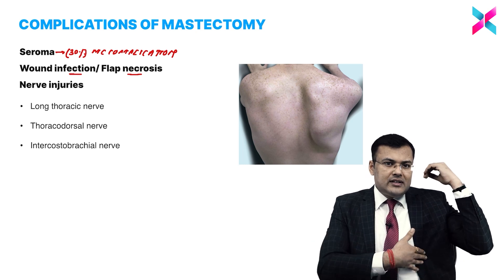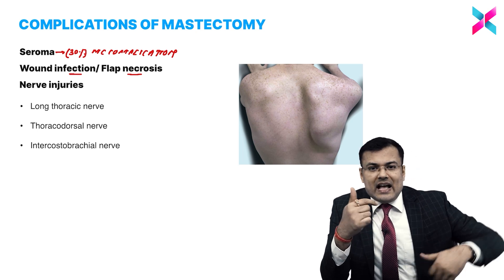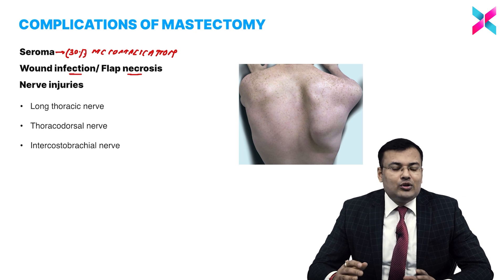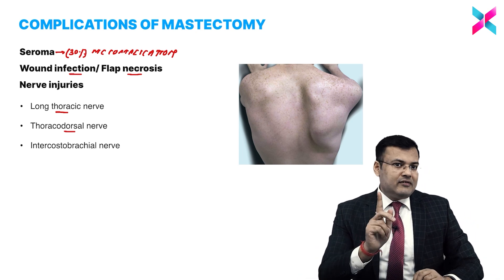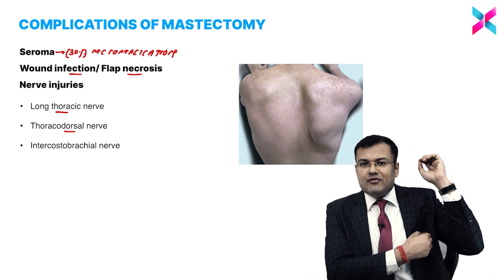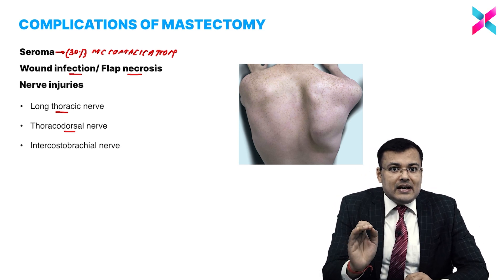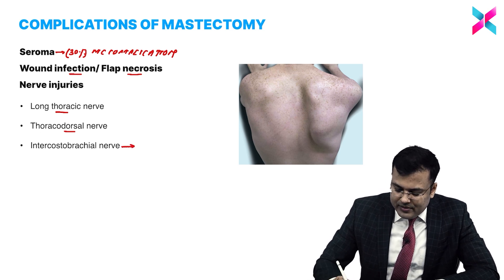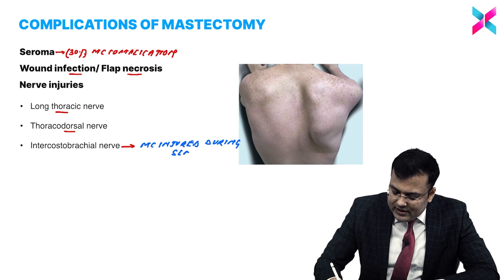What are the nerves injured? The muscles in relation to the breast include serratus anterior, supplied by the long thoracic nerve, and the large latissimus dorsi muscle, supplied by the thoracodorsal nerve. So the nerves injured are the long thoracic and thoracodorsal nerves. Especially, one nerve is injured during sentinel lymph node biopsy — that is the intercostobrachial nerve. This is very important and frequently asked.